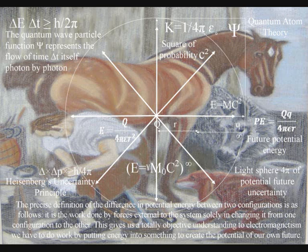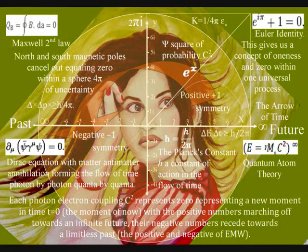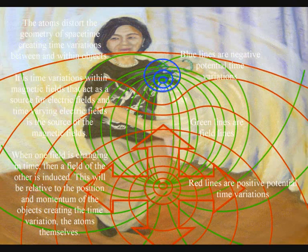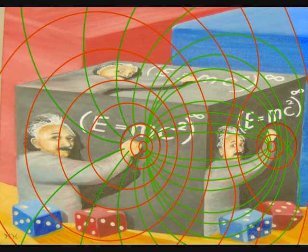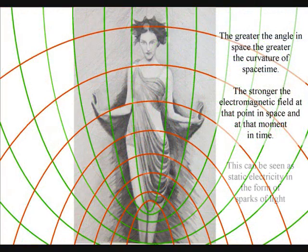This makes even more sense, because in Maxwell's theory of magnetic fields, any moving charged particle creates a magnetic moment. Because positive and negative charge is an innate part of matter that keeps cancelling out, this process is universal and continuous, forming a continuum of time, moment by moment. It is time variations within magnetic fields that act as a source for electric fields, and time-varying electric fields are the source of magnetic fields. When one field is changing in time, a field of the other is induced, relative to the position and momentum of the object creating the time variations — the atoms themselves — interacting with the electromagnetic waves.